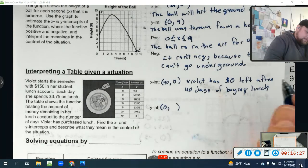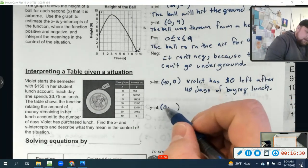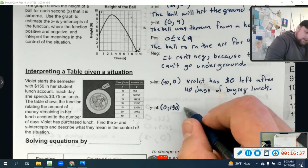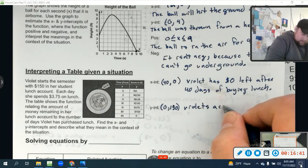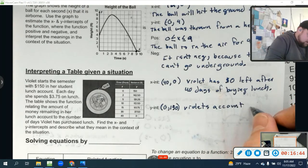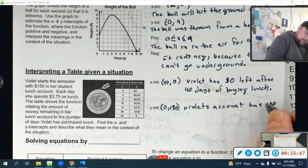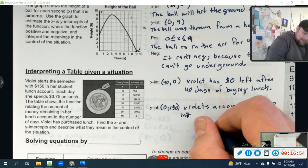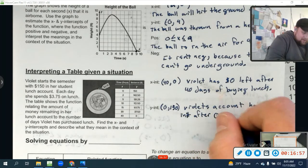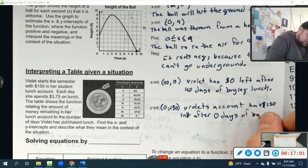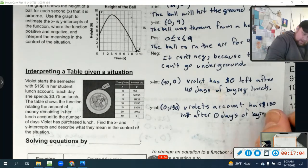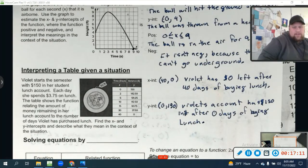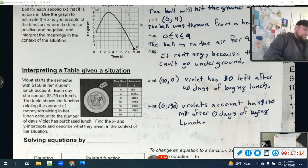And then where's the zero? Zero right here, and $150 on the y. What does it tell us? It tells us that Violet's account has $150 in it after zero days of buying lunch. Violet's account has $150 in it after zero days of buying lunch.